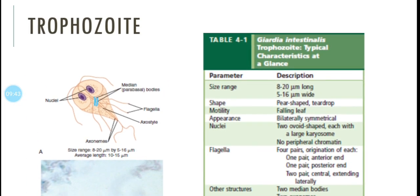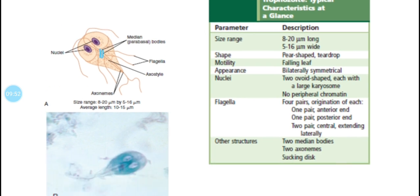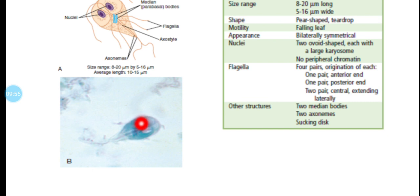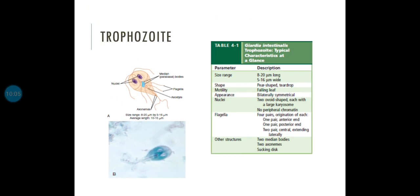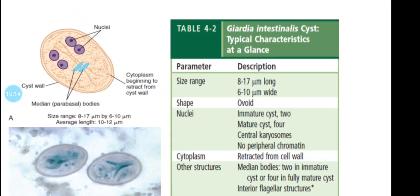Looking at the standard picture: you can see the two nuclei, axostyles, and the tear-drop structure with flagella. This is the complete structure of the trophozoite of Giardia lamblia and Giardia intestinalis.